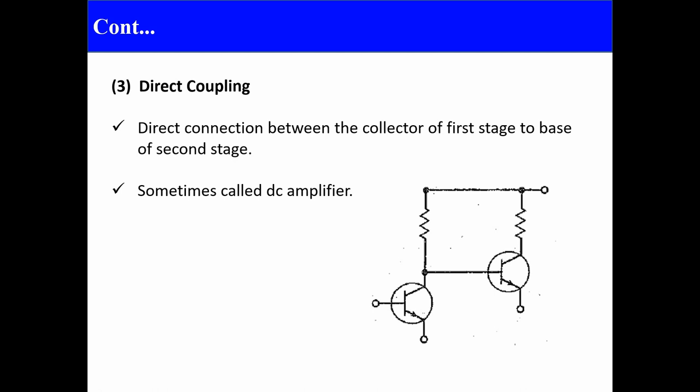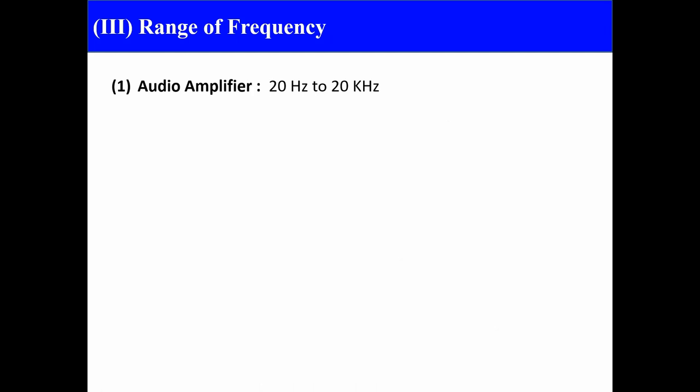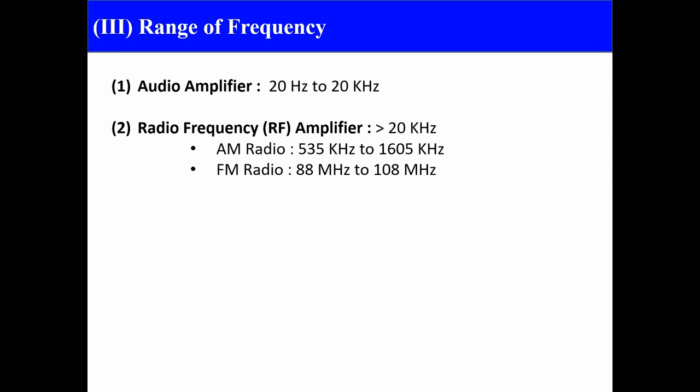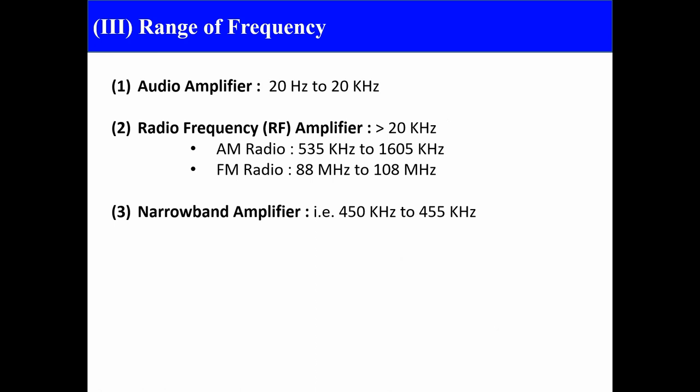Based on range of frequency, amplifiers can be classified as: first, audio amplifiers with a range of 20 Hz to 20 kHz; second, radio frequency amplifiers with a range greater than 20 kHz — for AM radio it is 535 kHz to 1605 kHz, and for FM it is 88 MHz to 108 MHz. Third is the narrow band amplifier, with a narrow range of 450 kHz to 55 kHz. Fourth is the wide band amplifier, with a very large frequency range from 0 Hz to 2 MHz.